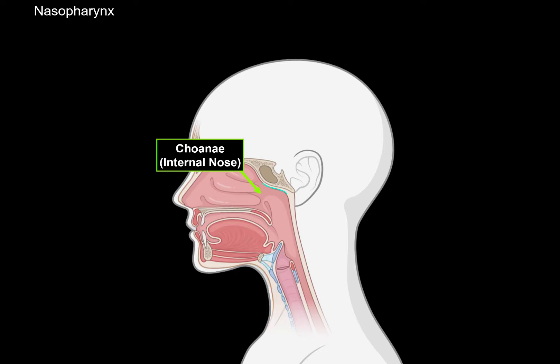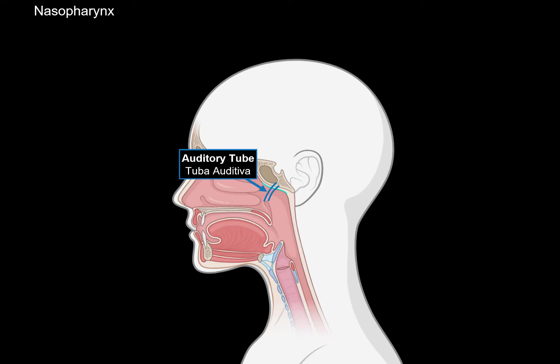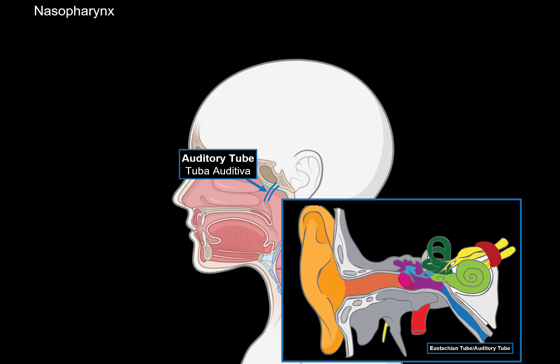Another structure found in the nasopharynx is the auditory tube — a tube that connects the pharynx to the middle ear. This is also called the Eustachian tube. We have the outer ear, the middle ear, and the inner ear. In the middle ear you'll find the ossicles: the malleus, incus, and stapes, as well as the tympanic membrane. So the auditory tube connects the nasopharynx to the middle ear.